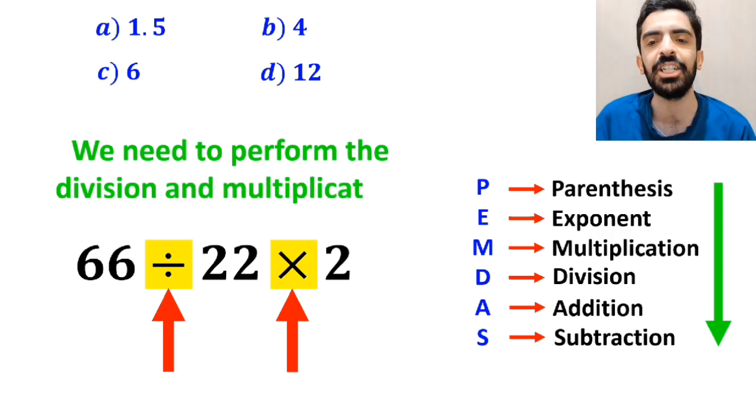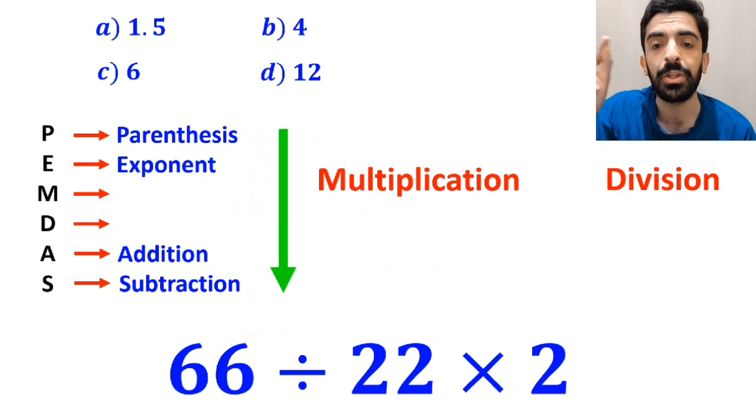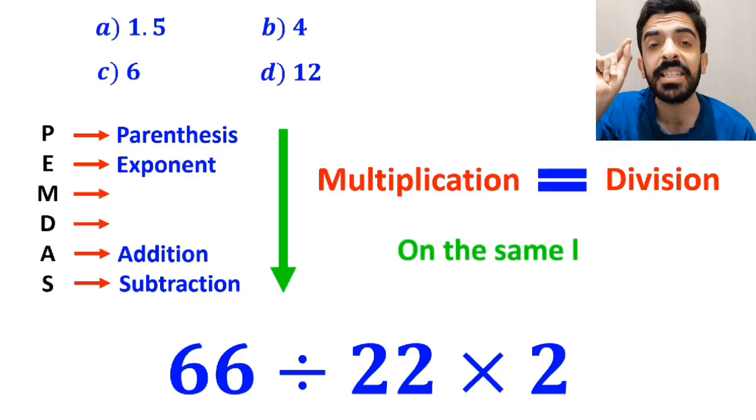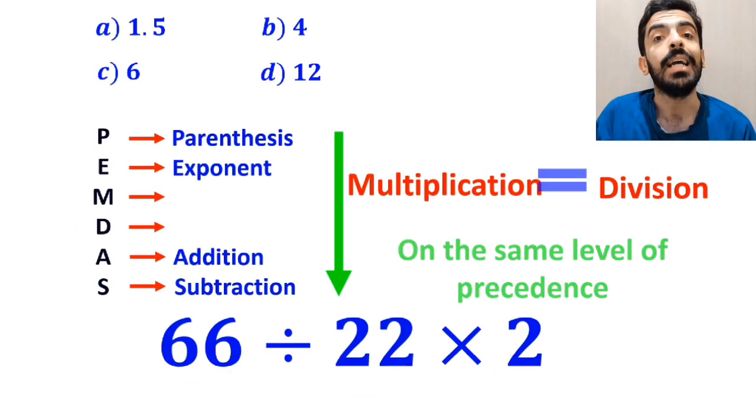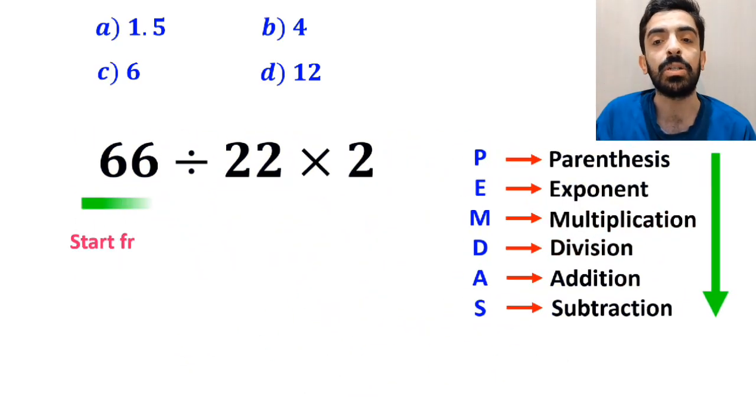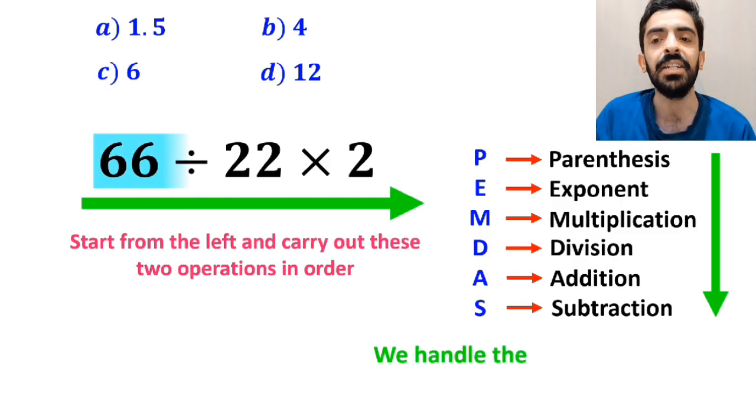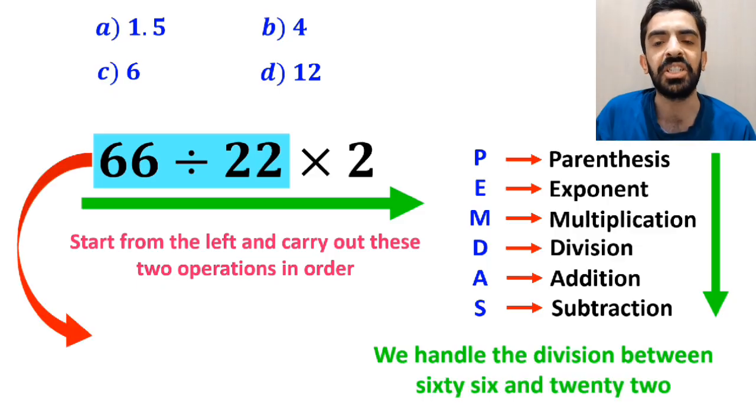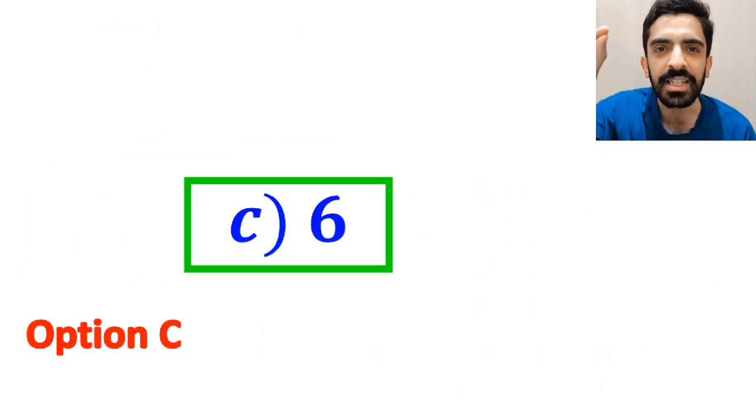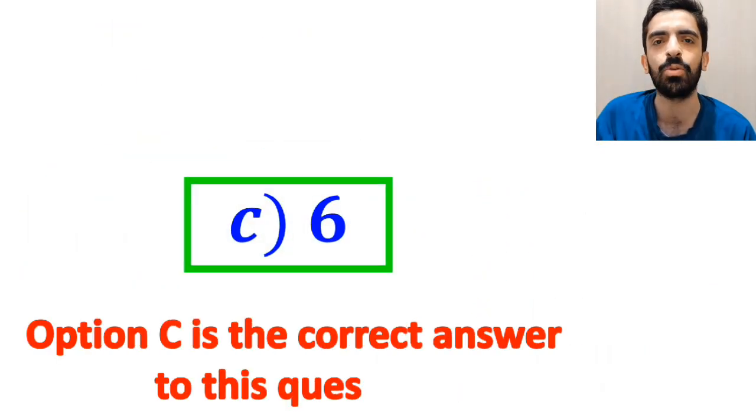Now we need to perform the division and multiplication. However, it's very important to keep in mind that multiplication and division are on the same level of precedence. In this case, the best approach is to start from the left and carry out these two operations in order. So first we handle the division between 66 and 22, which simplifies this expression to 3 multiplied by 2. And finally, the answer becomes 6. Therefore, option C is the correct answer to this question.